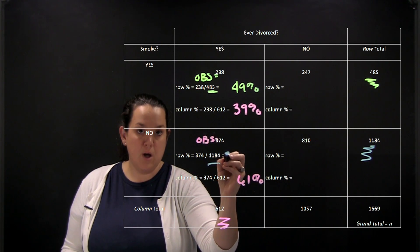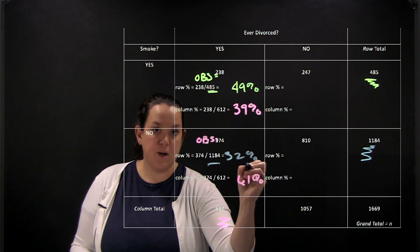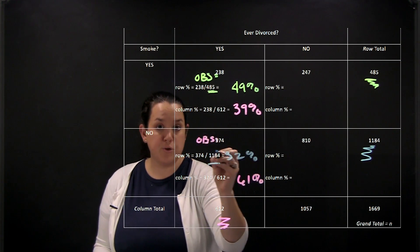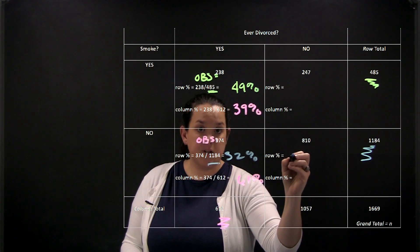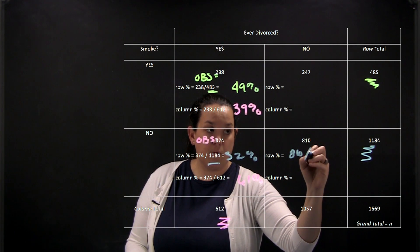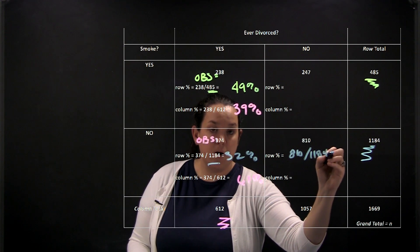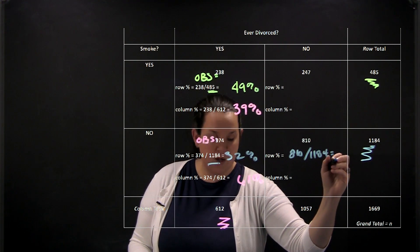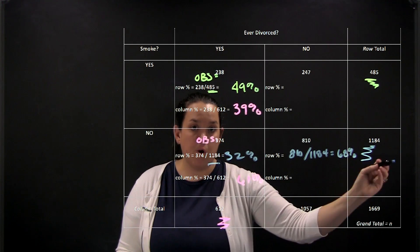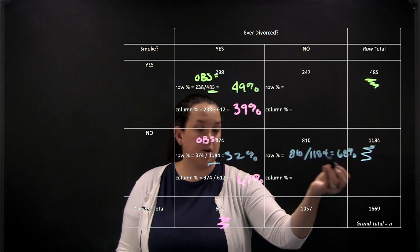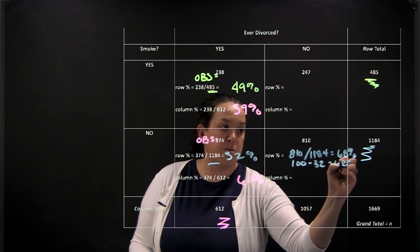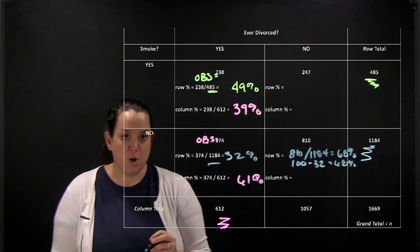The other cell in that row — 810 divided by 1184 — gives 68%. These two row percents should total 100%, which they do. Alternatively, because the whole row has to add up to 100%, you could take 100 and subtract 32 to find 68% as well.